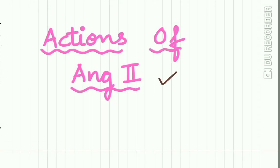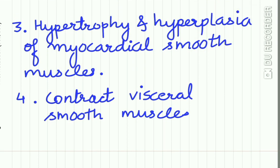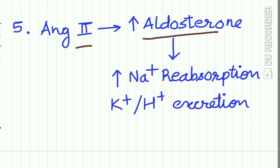What are the actions of angiotensin 2? It causes vasoconstriction, which causes hypertension or increased blood pressure. It increases the force of myocardial contraction, reduces cardiac output, and causes reflex bradycardia. It also causes hypertrophy and hyperplasia of myocardial smooth muscles and contracts visceral smooth muscles. It increases aldosterone from the distal convoluted tubule, which increases sodium reabsorption and increases potassium and hydrogen excretion.